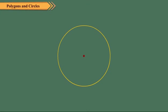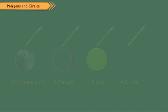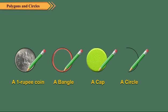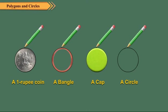Let us discuss various methods by which we can draw circles. We can draw a circle by moving a pencil around the edge of a 1 rupee coin, a bangle, the cap of a bottle, etc.